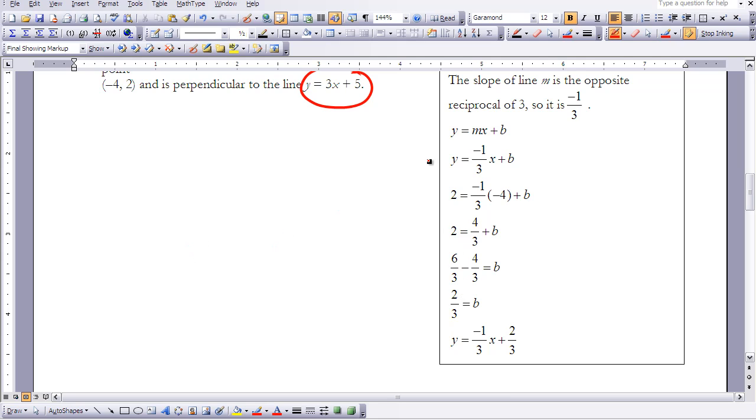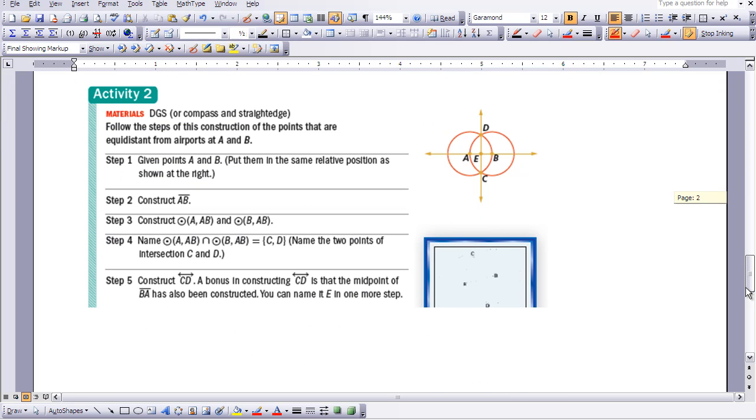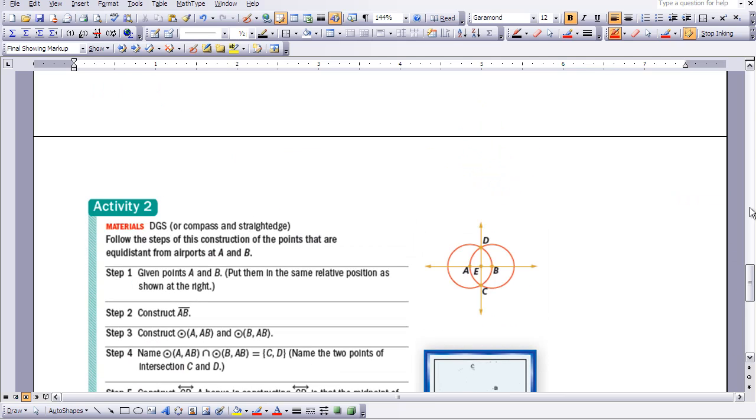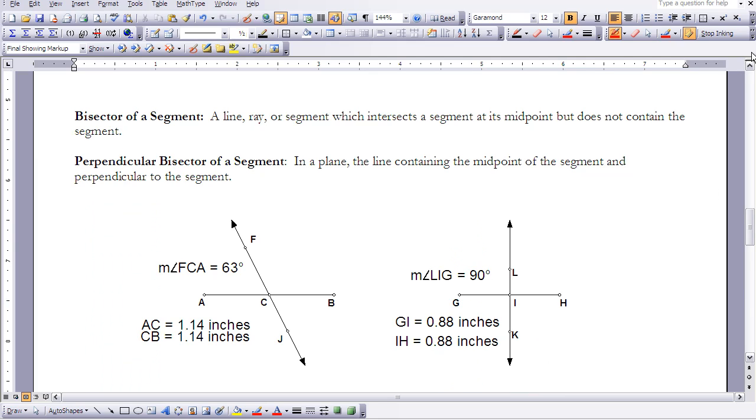The last thing I want to discuss: we're going to do a calculator activity in class, but I want to talk about lesson 3-9 very quickly. It's about what is a perpendicular bisector and what is a bisector of a segment. A bisector, as we studied with angles, cuts an angle in half into two equal parts. A bisector of segment does the same thing, cutting the segment into two equal parts.